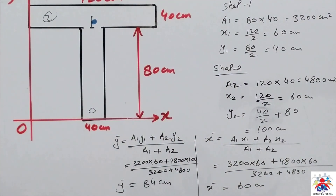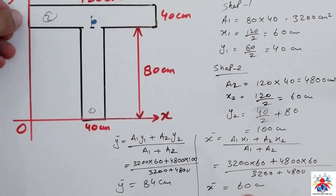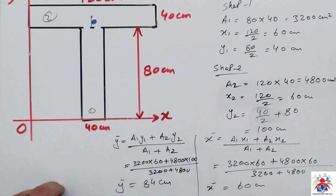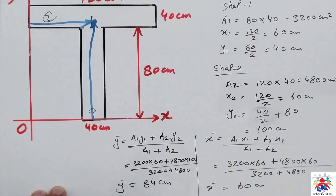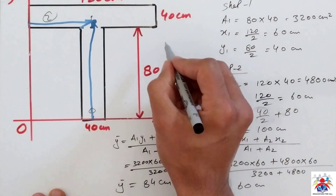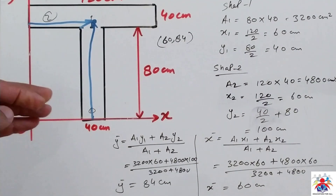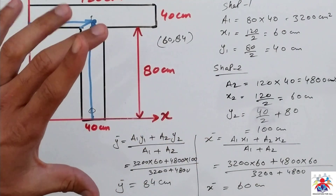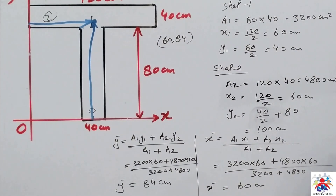X-bar is 60 centimeters, meaning we travel 60 centimeters from the origin along the x-axis. From here to there is 40 plus 20, because the middle of 40 is 20, then from bottom to the top. So the center of gravity for our T-section is at the point (60, 84) centimeters. Traveling 84 centimeters from the bottom and 60 centimeters from the origin brings us to the point where the T-section is in equilibrium. I hope you understood — thank you for watching, please subscribe.